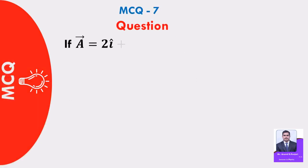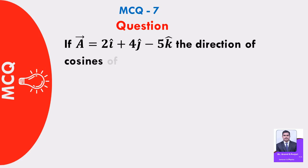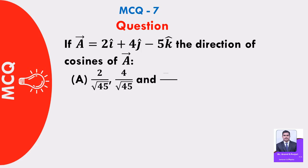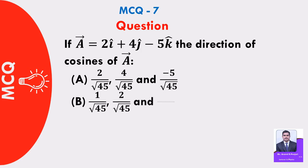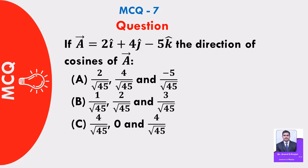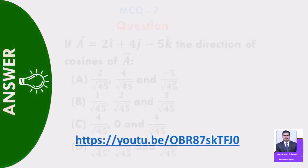MCQ 7: If vector A is equal to i cap plus 4j cap minus 5k cap, the direction cosines of vector A are: A) 2 by root 45, 4 by root 45, and minus 5 by root 45; B) 1 by root 45, 2 by root 45, and 3 by root 45; C) 4 by root 45, 0, and 4 by root 45; D) 3 by root 45, 2 by root 45, and 5 by root 45. Answer: A — 1 by root 42, 4 by root 42, minus 5 by root 42.